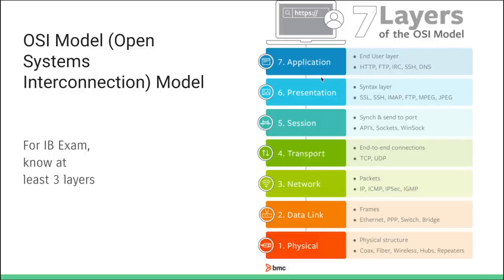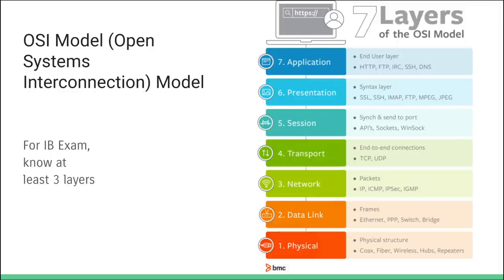There are seven layers to data transmission over a network: application, presentation, session, transport, network, data link, and physical. The physical layer is the actual wires or wireless connection, while the application layer is things like HTTP for websites. For the IB exam, you just need to know the names of three of these layers — pick any three and memorize them, such as physical, data link, network, or application.